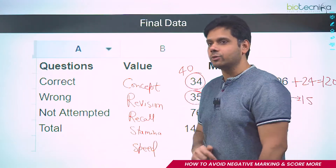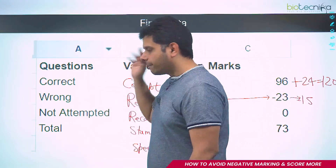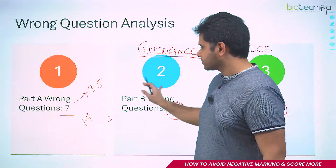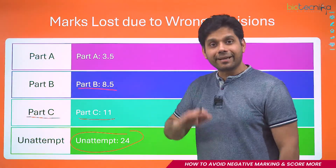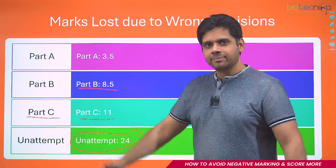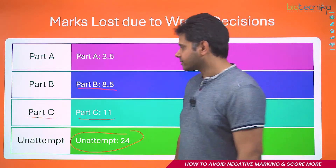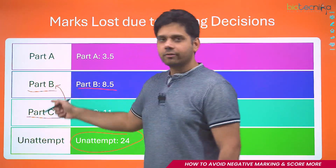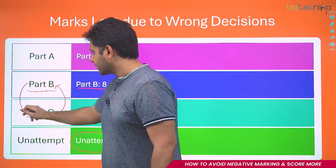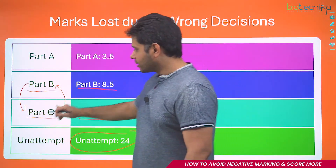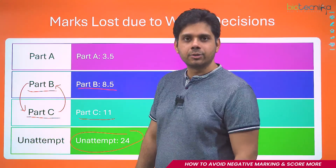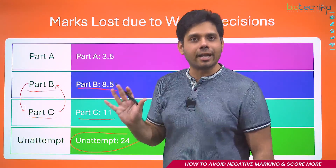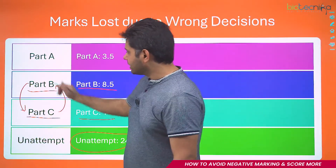Next exam, here is the sequence to follow: first go for Part C and maximize it — attempt as many questions as you can, skip only the tough ones. Then come to Part B and solve as much as you can. Then come back to Part C, solve whatever you still can, and revise what you've already attempted. Recheck calculations, don't overthink.